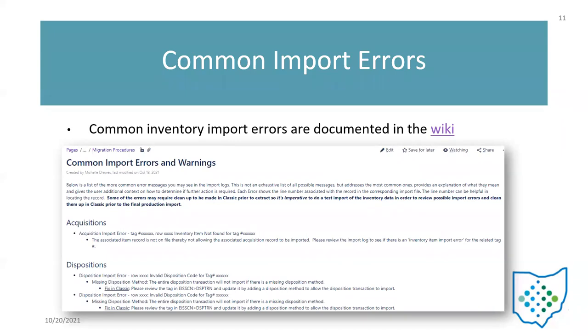Because every new data set from classic can generate new errors, we've been adding to a resource called 'common import errors and warnings.' There's a link on the wiki that contains all the different warnings and errors you can get in inventory, including the actual error message and the fix for what you need to do. We're going to release that PowerPoint on the wiki so you have access to it, as well as this recording. Thank you for taking the time to listen.